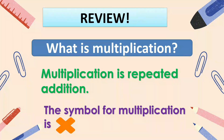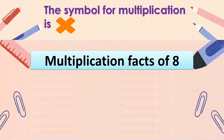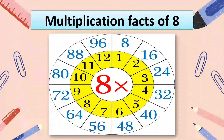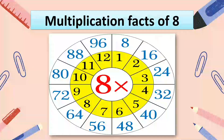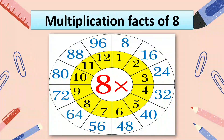Are you excited to learn about multiplication facts of 8? Here is the wheel of 8 — the multiplication facts of 8. The 8 is in the middle, and you will multiply 8 by the number in yellow. The product is the number in blue. So 8 times 1 is 8, and 8 times 2 is 16.